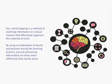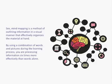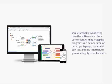Mind mapping is a method of outlining information in a visual manner that effectively organizes the material at hand. By using a combination of words and pictures during the learning process, you're processing information six times more effectively than words alone.